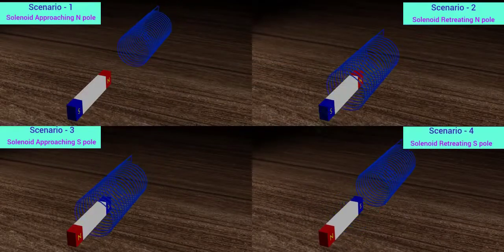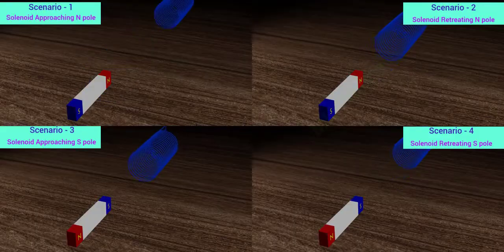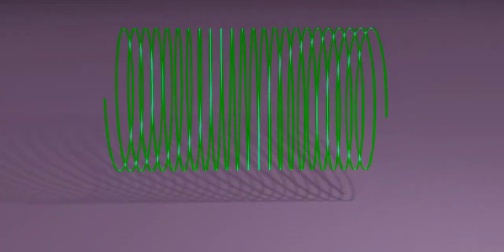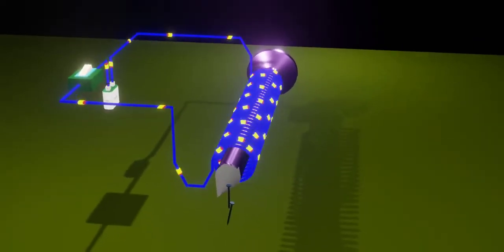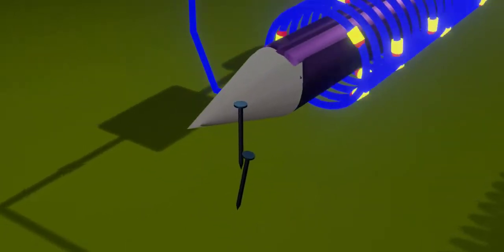Before going further, let us check the positions of the north pole and the south pole in a solenoid when current flows through it. Normally, a solenoid is a non-magnetic object. When an electric current flows through it, it starts behaving like a magnet.